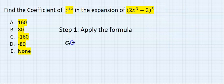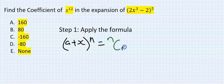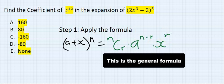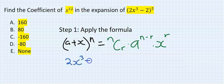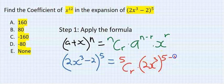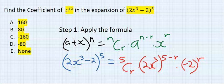Step 1: Apply the formula. (a + x)^n gives us nCr · a^(n−r) · x^r. So (2x³ − 2)^5 becomes 5Cr · (2x³)^r · (−2)^r. Here, my 'a' is 2x³, my 'x' is −2, and my n is 5.